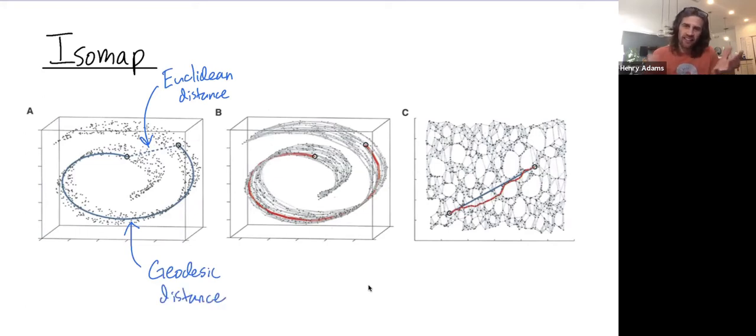Now if we had the entire Swiss roll there, you could know how to move inside of that surface. We don't have the entire Swiss roll, we just have some data points. So what does it mean to have this continuous geodesic path when all I have is discrete data points sampled perhaps from the surface?